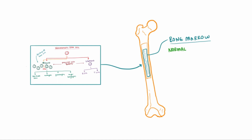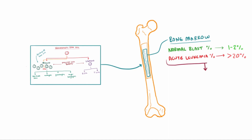If you took a sample of somebody's bone marrow that didn't have acute leukemia, you'd probably notice that the percentage of their blast cells is about 1–2%, which would be normal. If there are greater than 20% blast cells in the bone marrow, we define that as acute leukemia. When all these blast cells start to build up, they get crowded and crowd out normal cells differentiating, so you end up with a loss of cells that you'd normally produce in the bone marrow.